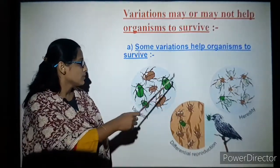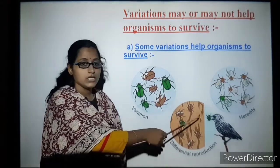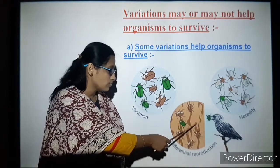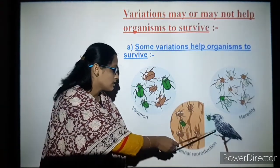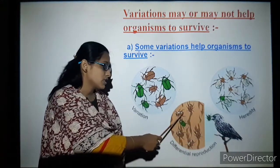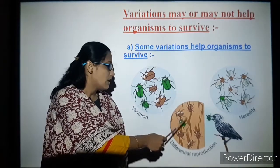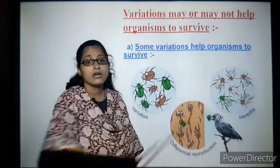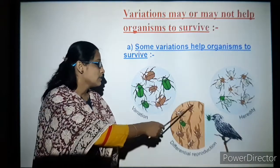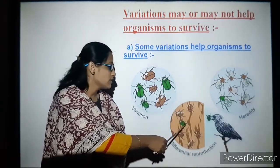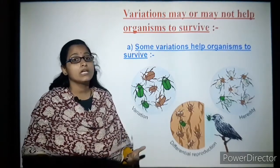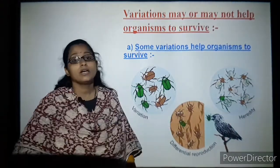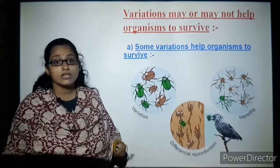Some variations help organisms to survive. For example, consider color differentiation in beetles living on brown wood. If the beetle is also brown in color, a crow or bird cannot distinguish the beetle from the wood. However, green beetles can be clearly seen and get eaten by the birds. So the green beetle population gets reduced or becomes nil, while the brown beetle population keeps increasing.